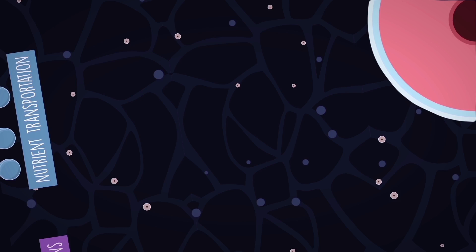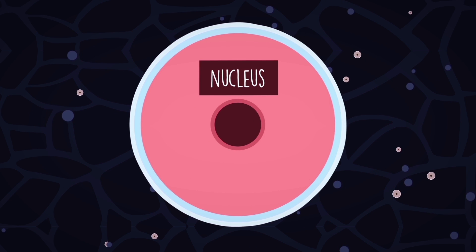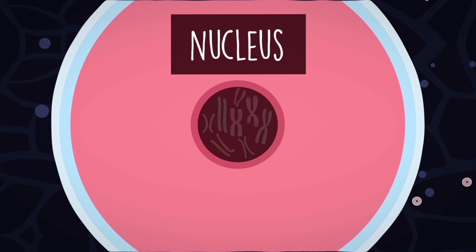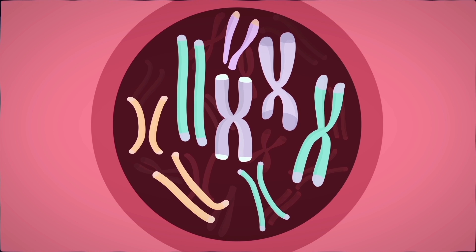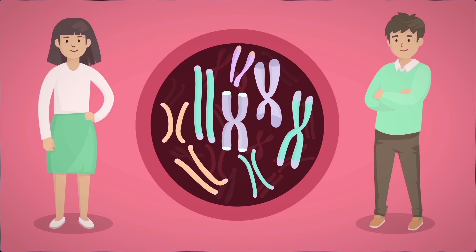Perhaps the most important part of the cell is the nucleus. Inside the nucleus, there are 23 pairs of chromosomes for a total of 46. In a single pair, there is one chromosome from your mother and one from your father.